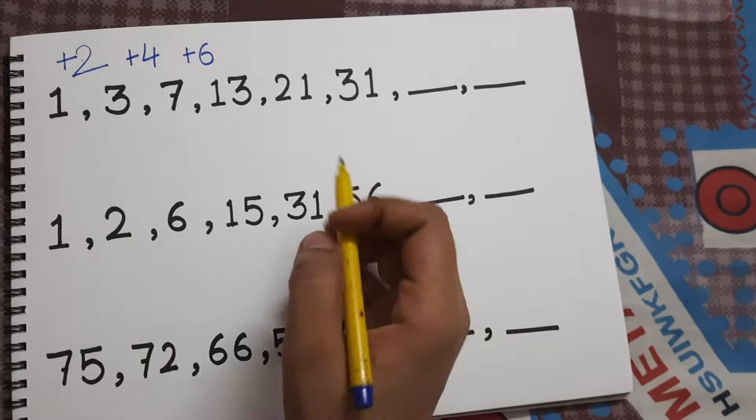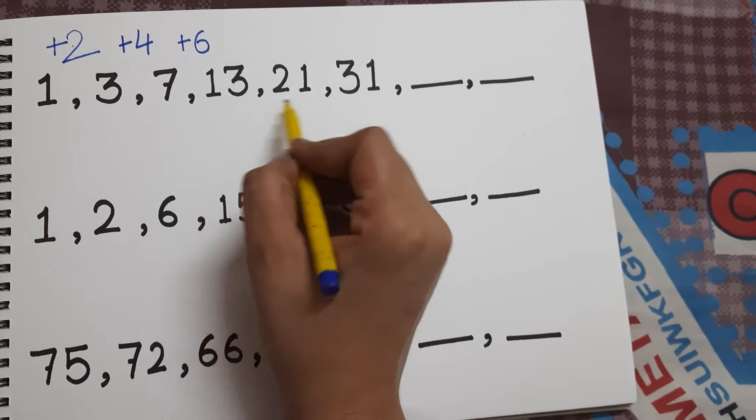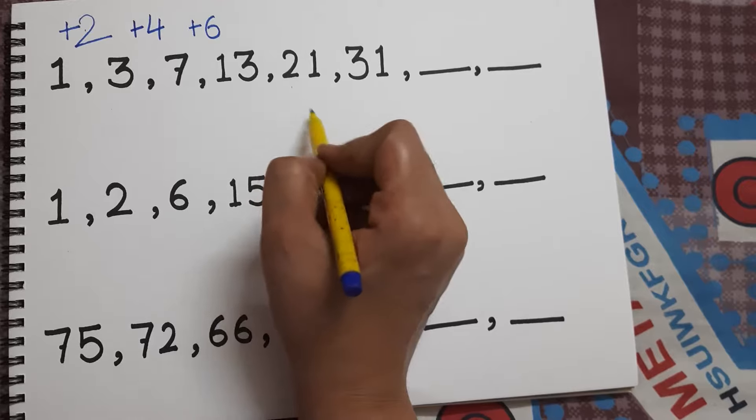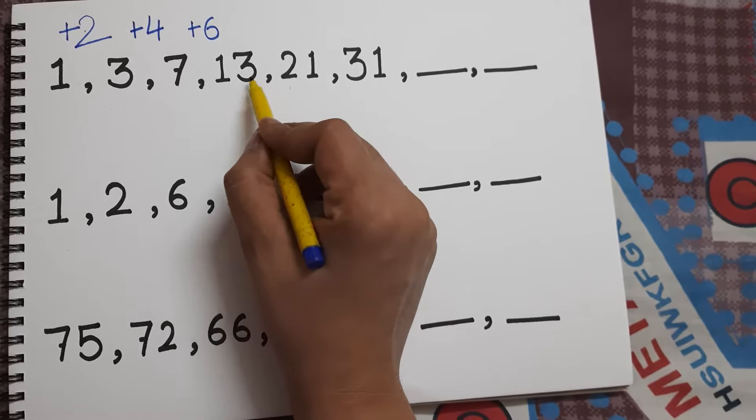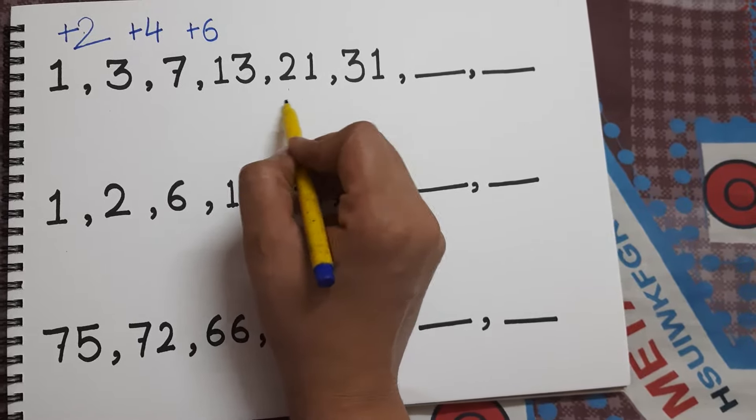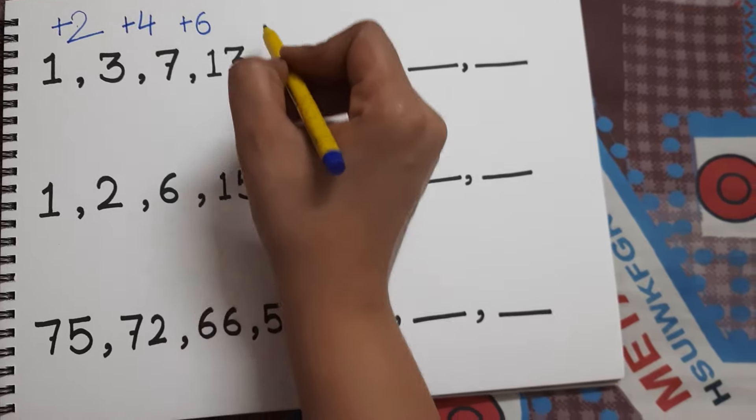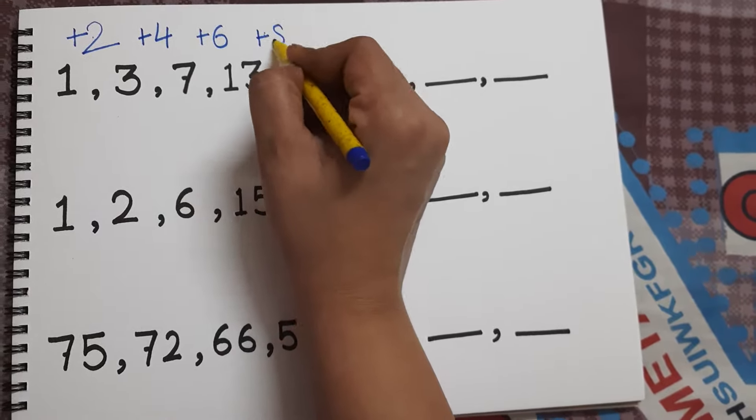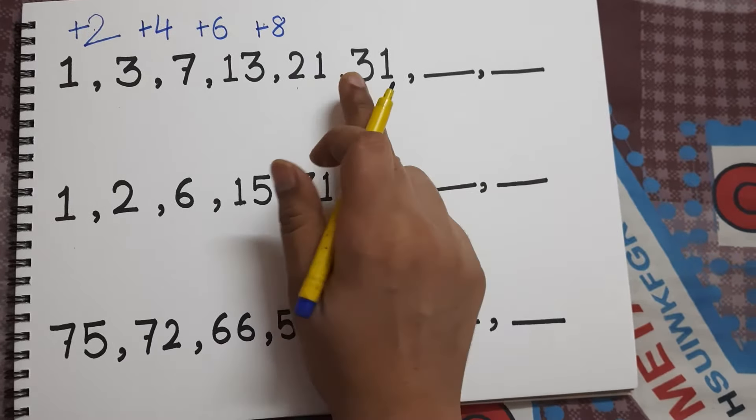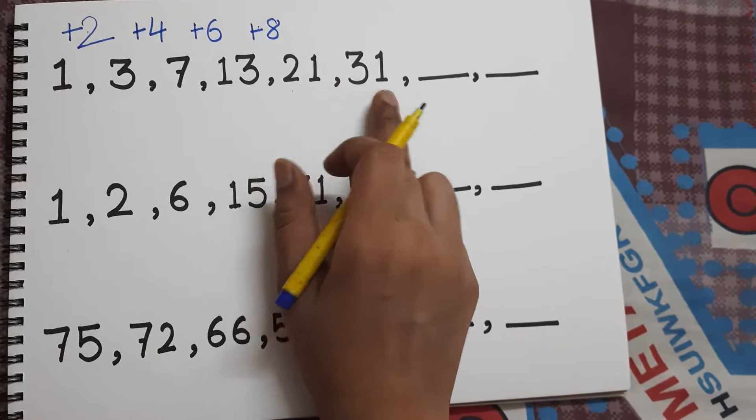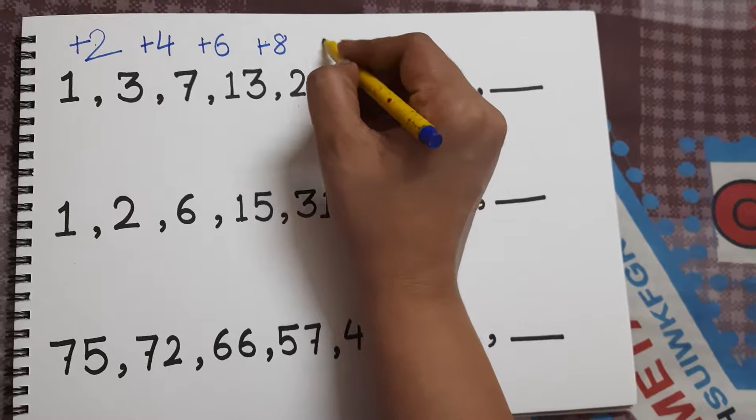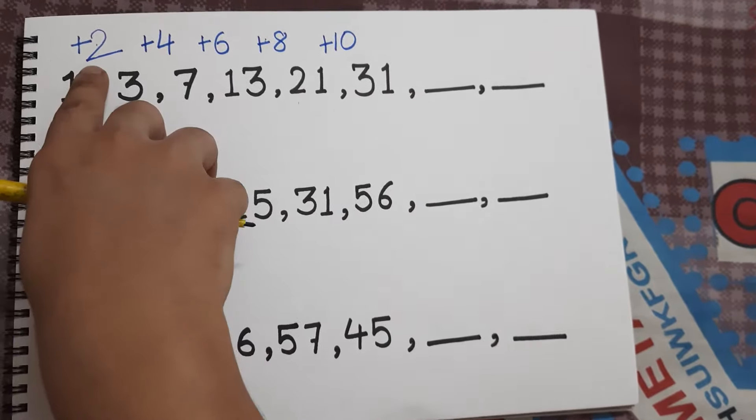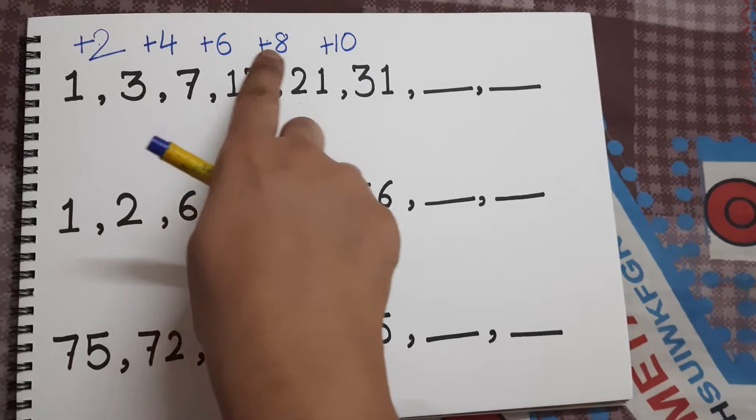13 and 21, what is the difference? If you are not able to do it orally, you can write over here and subtract. Obviously the smaller number you will write as the subtrahend. So here it is plus 8. Next one, 21 and 31, it is plus 10.